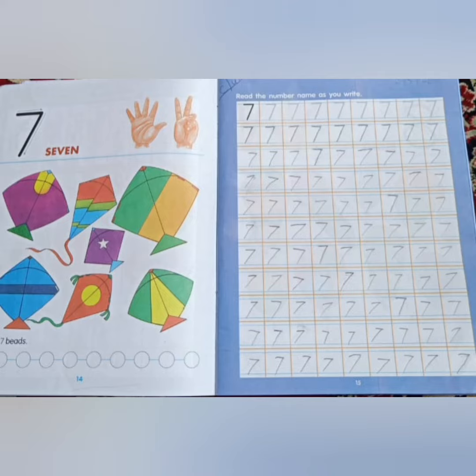Now children, take out your number maths book. Page number 14 and 15. And don't forget to write the classwork and date.